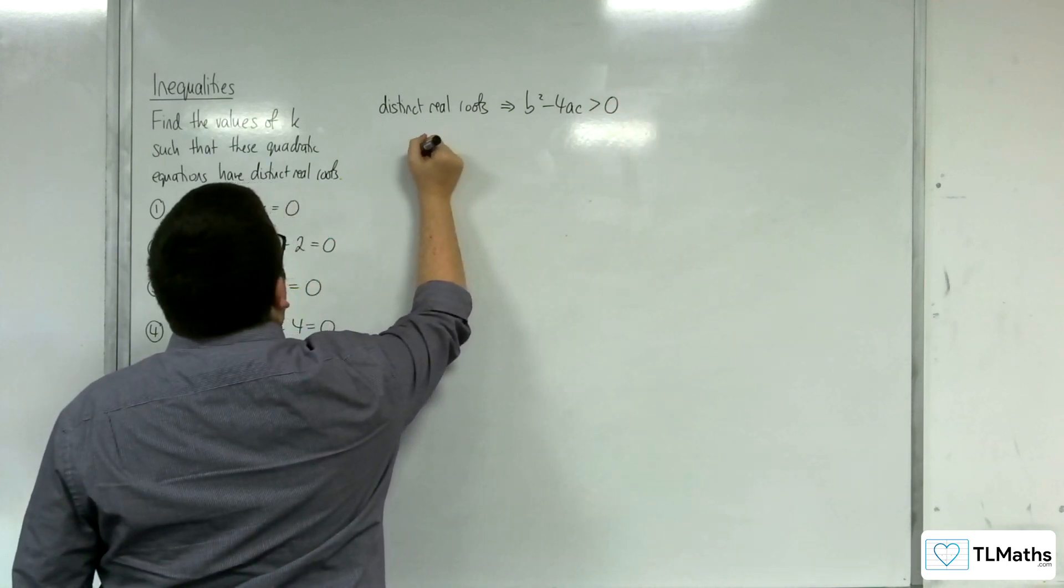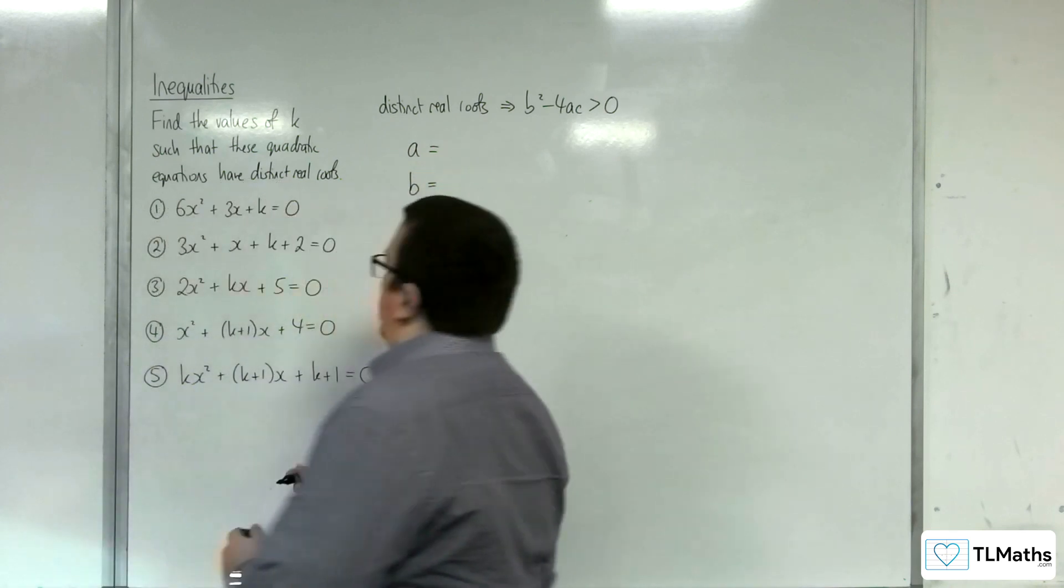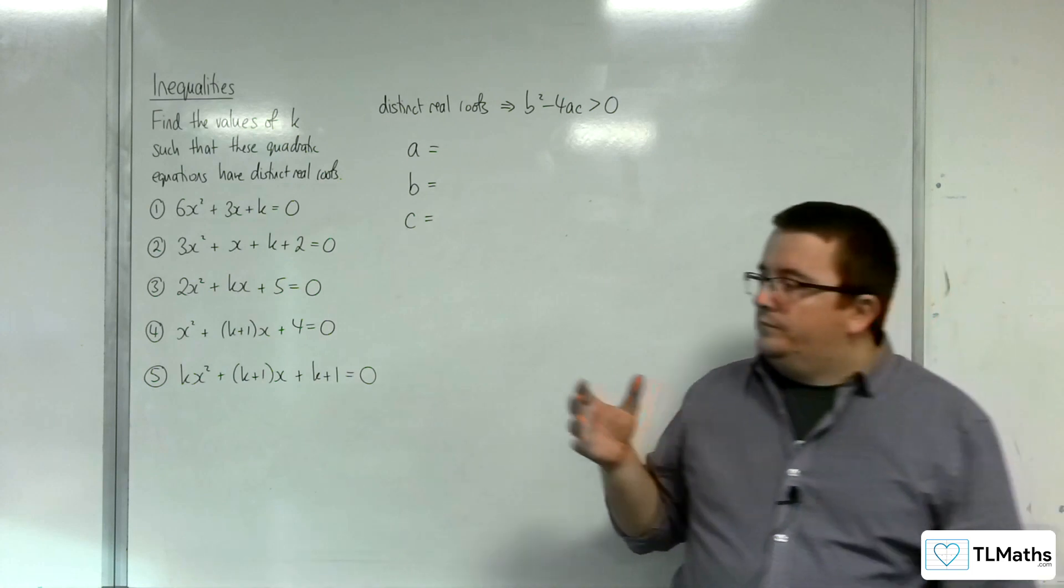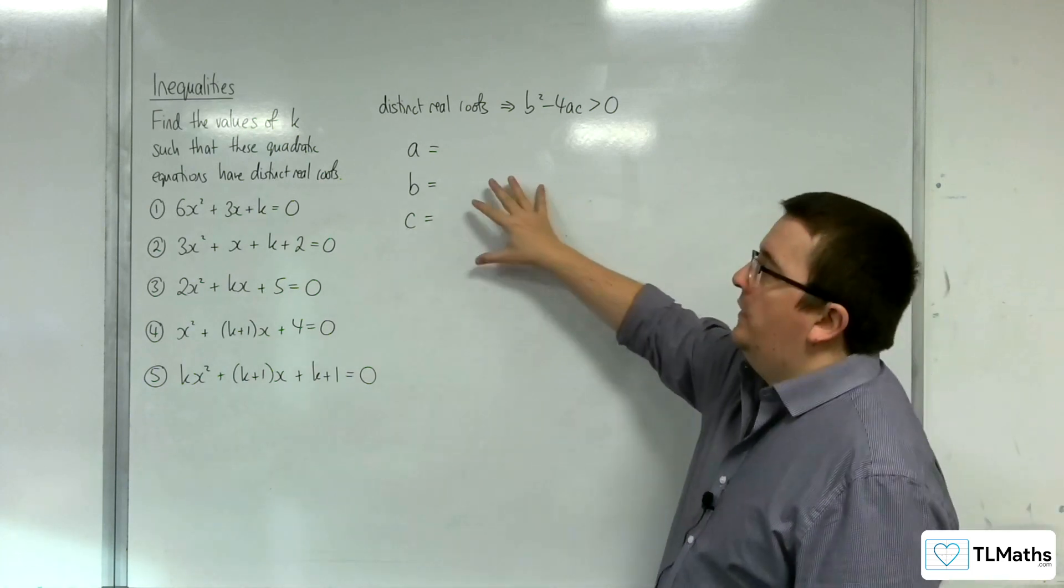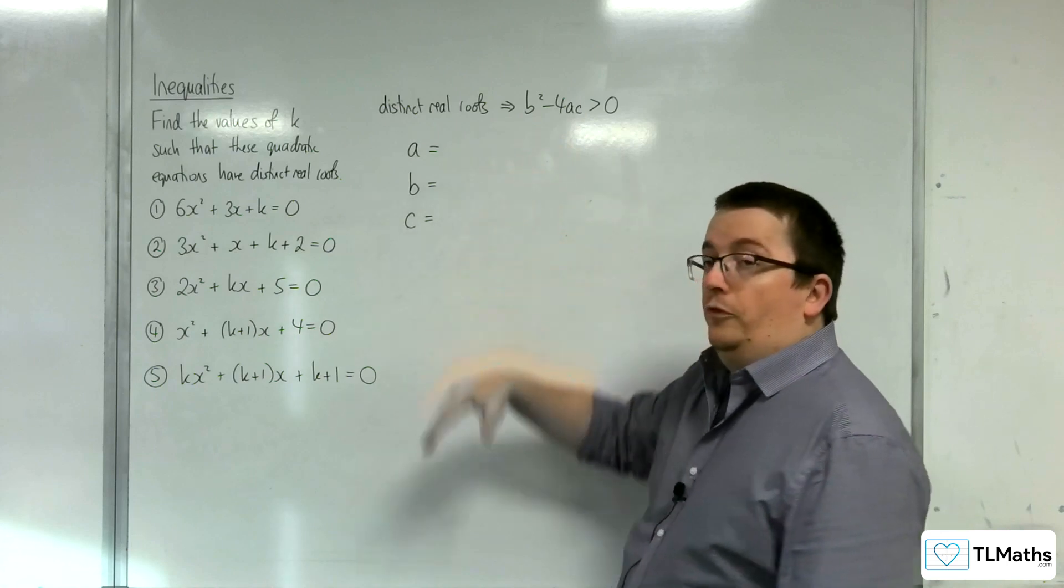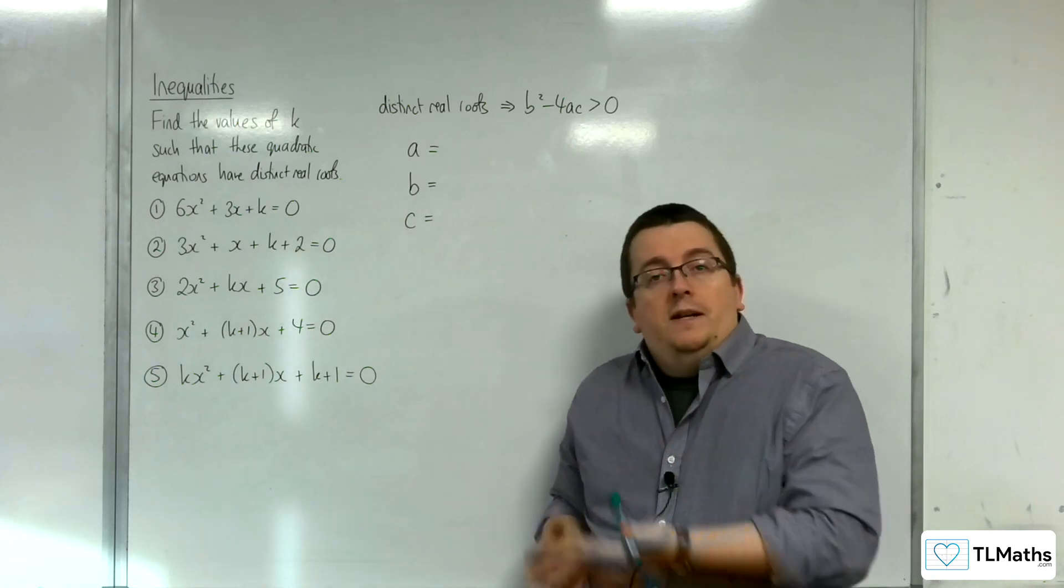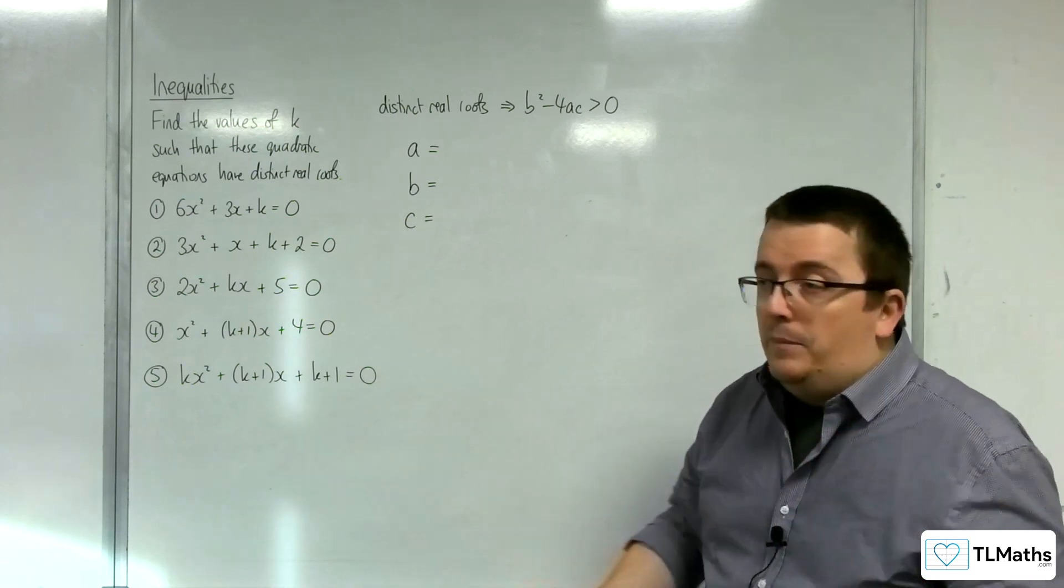We're going to need to identify a, b, and c in each of these cases. You'd probably want to make this very explicit to the examiner. Writing down a equals, b equals, c equals first will not only help you make sure that you get this bit right, but also shows off to the examiner your method.